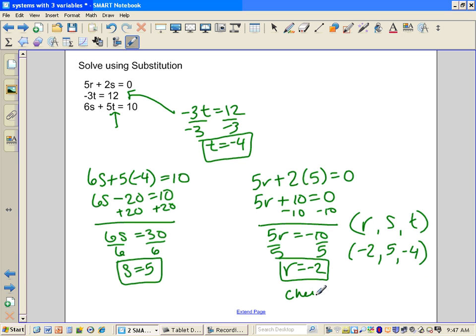If you wanted to do a quick check, we could probably check this out. So, maybe with the bottom equation, 6 times s, so 6 times 5 plus 5 times negative 4, is that equal to 10? Well, that's 30 minus 20, yeah, that's equal to 10. So it checks. Nice, simple method, but again, we're starting with simpler equations.